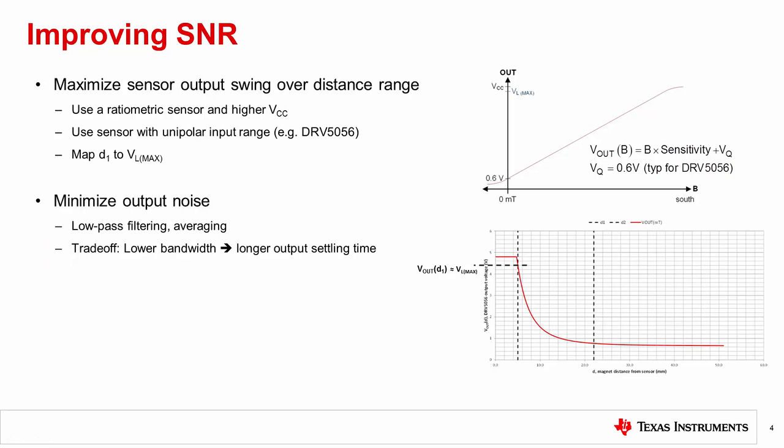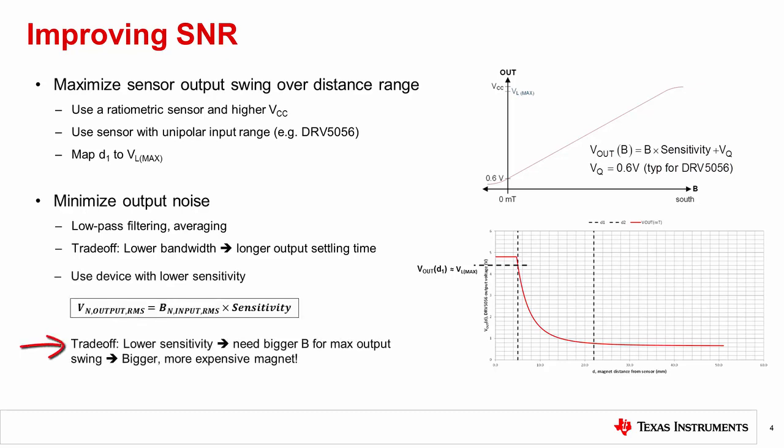Another option is to use a device with lower sensitivity, which amounts to a lower gain on the input referred noise. Note that input referred noise is the same for all sensitivity variants of a given Hall effect device. However, with lower sensitivity, a larger input signal is necessary to generate the required output swing, and generating a larger input signal over the same distance range requires a larger magnet, which drives up system cost.